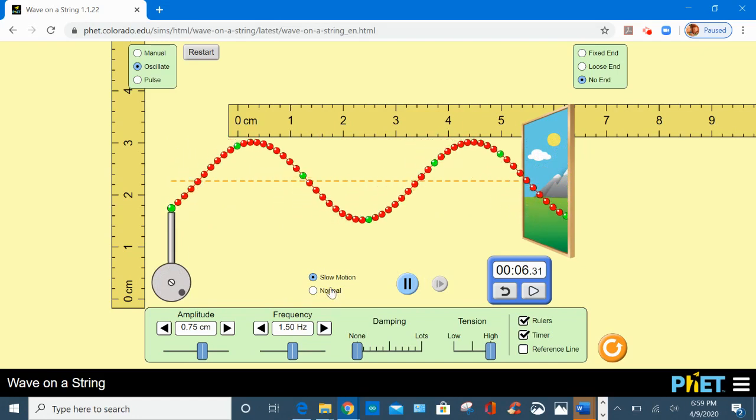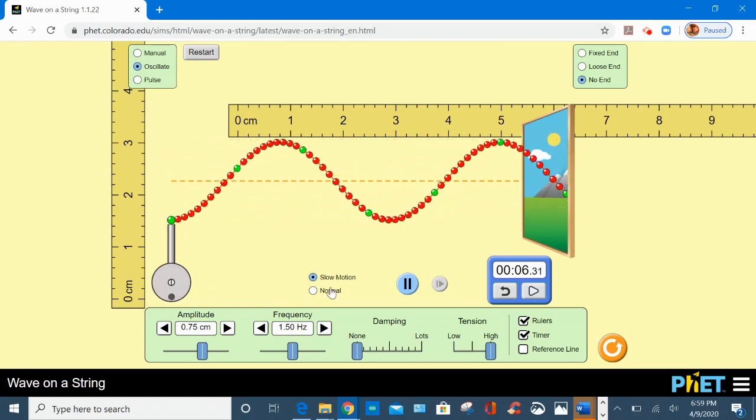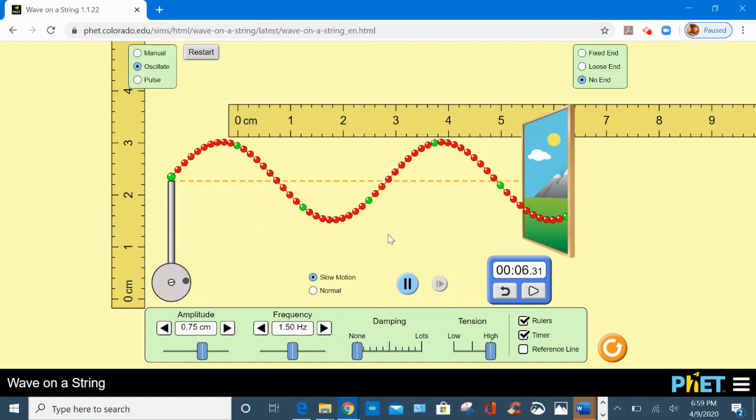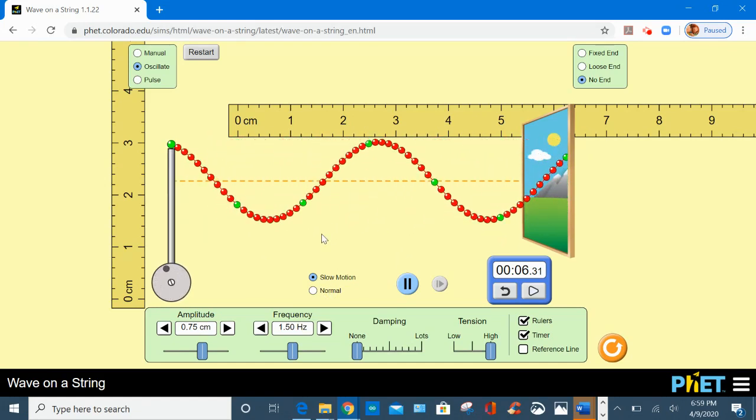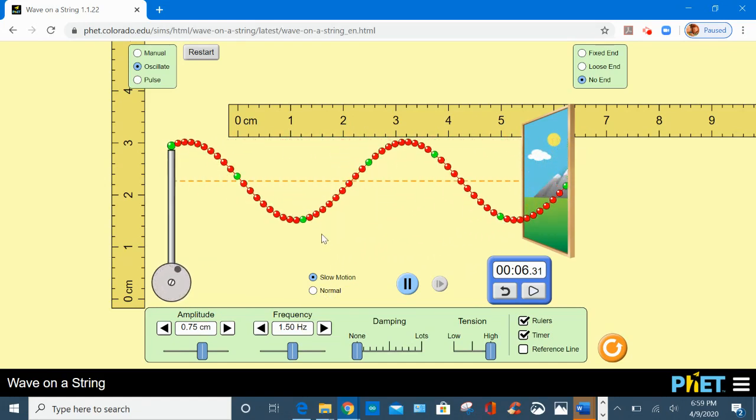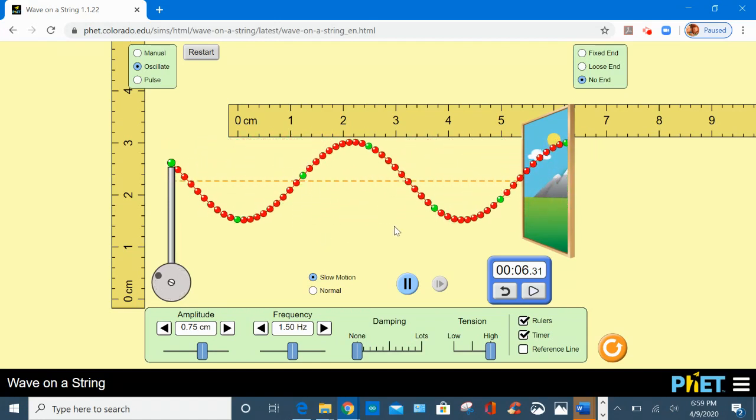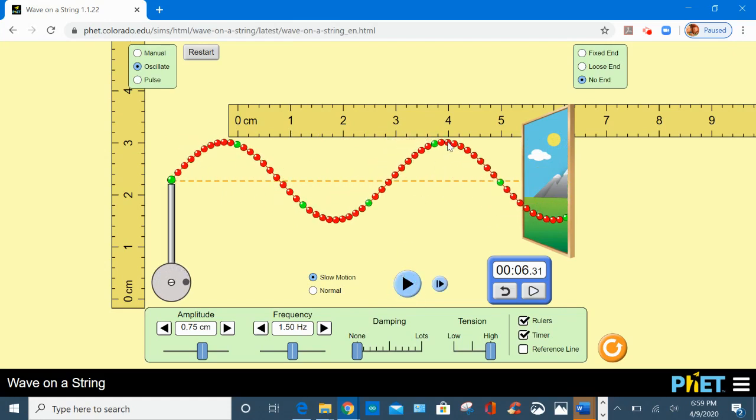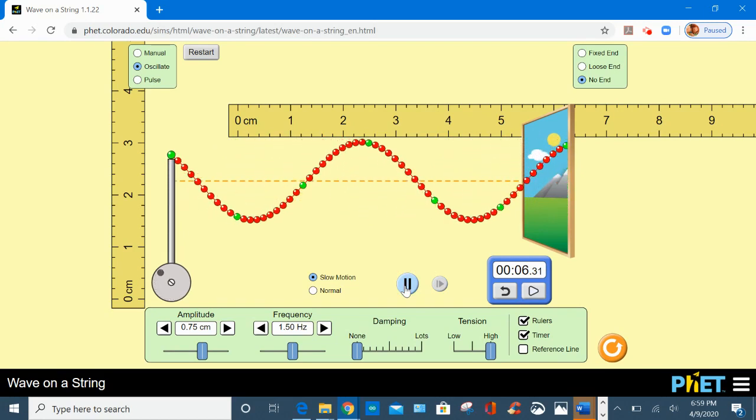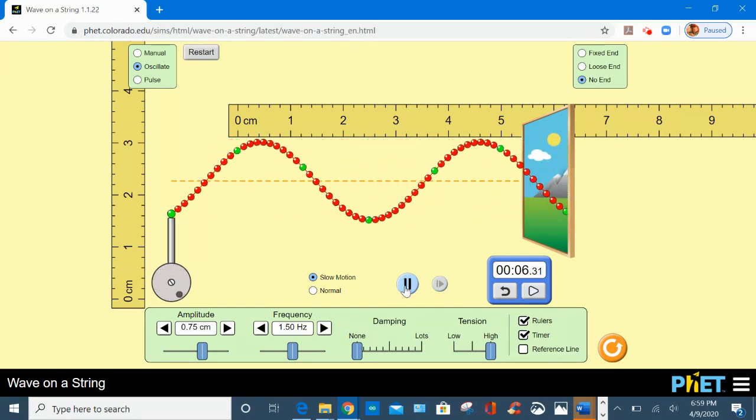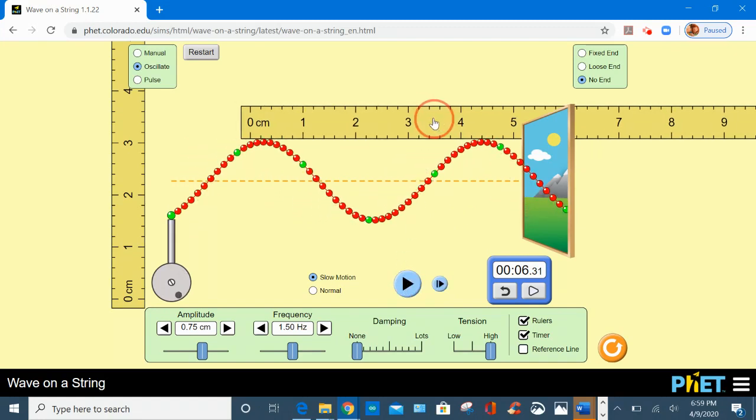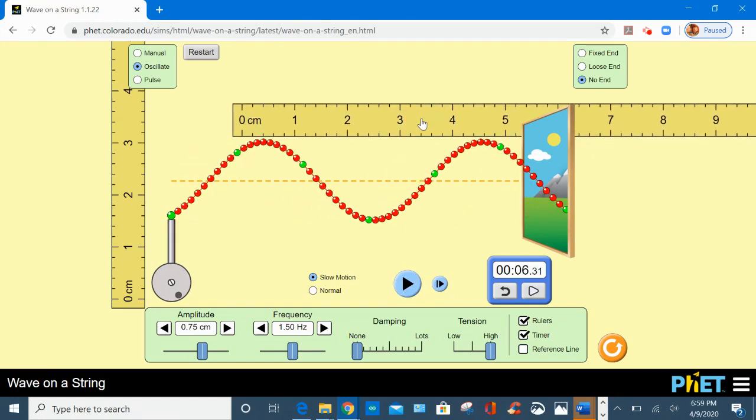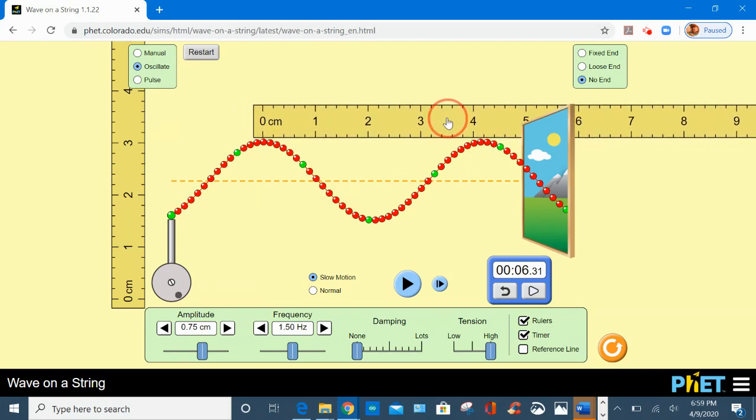Okay, so now my next practice is to calculate the speed of this wave. So we know the speed of a wave is the wavelength times the frequency. So the wavelength that we measured is 4.2 centimeters.